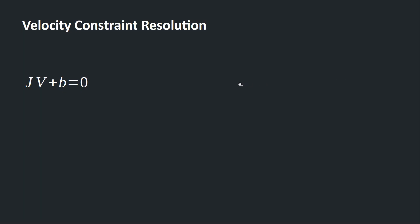A quick review on velocity constraint resolution from our last presentation. This is the general form JV + b = 0, J is our Jacobian, V is our velocity vector, b is our bias, and if the left side of the equation does not equal 0, this velocity constraint is violated.